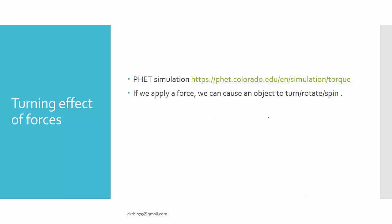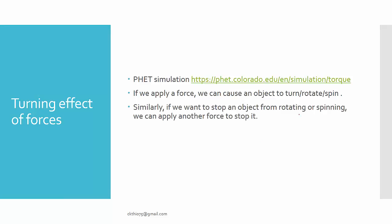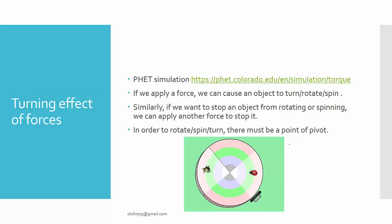If we apply a force, we can cause an object to rotate, spin, or turn. Similarly, if you want to stop an object from rotating or spinning, we can apply an opposite force to stop it. Do take note that in order to rotate, spin, or turn, there must be a point of pivot. In this case, the point of pivot is at the center.